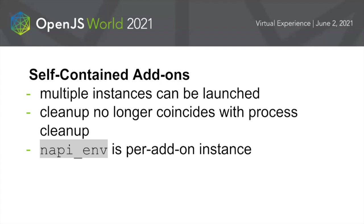C++ nowadays has something called thread local as a storage class specifier. However, that is also not recommended because a JavaScript thread may or may not coincide with a native thread. It is possible to create a JavaScript world without creating a new thread, in which case it's two worlds running in sequence, time-sliced and cooperatively multitasking on the same thread. The best solution is to use self-contained add-ons where it is guaranteed that multiple instances can be launched, and the cleanup is of the JavaScript world — which may be the process, a thread, or multiple environments running on the same thread.